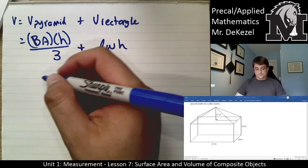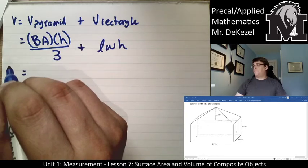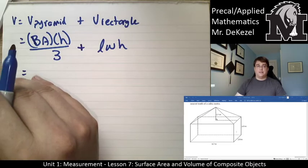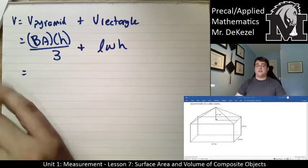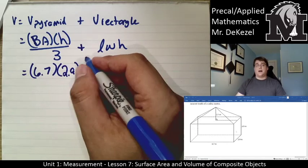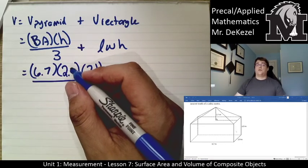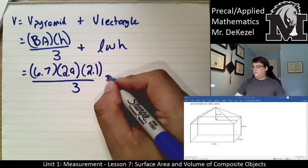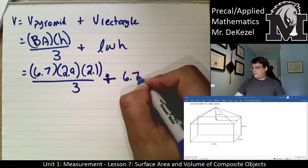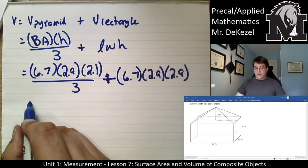Let's just plug those numbers in and find out what we get. The base area of the pyramid is going to be 6.7 by 2.9 — those are the two sides that make up the lengths of that pyramid. So 6.7 multiplied by 2.9, and then the height of that pyramid is 2.1 meters, divided by three. We then add the length times the width times the height, so that's 6.7 times 2.9 times 2.9.